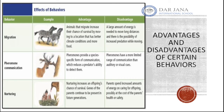The advantages of pheromone communication are that they provide a species-specific form of communication that reduces a predator's ability to detect them. The disadvantage is that pheromones have a limited range compared to auditory or visual cues, since sounds can spread faster. For nurturing behavior, the advantage is that it increases offspring survival chances and ensures genes are transmitted to future generations. The disadvantage is that parents spend a large amount of energy on caring for offspring, which can cost the parent's own health or safety.